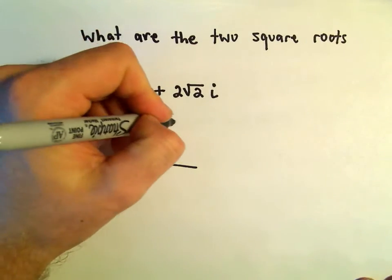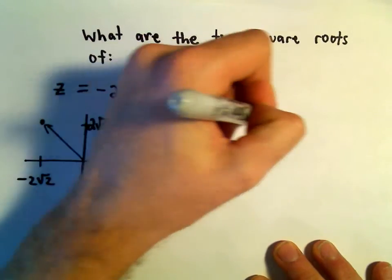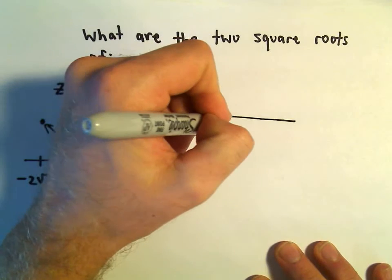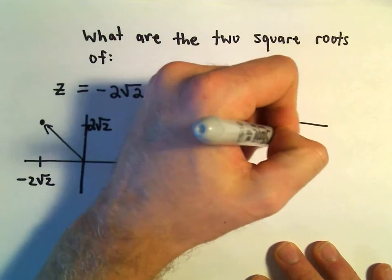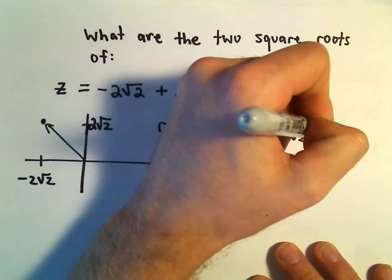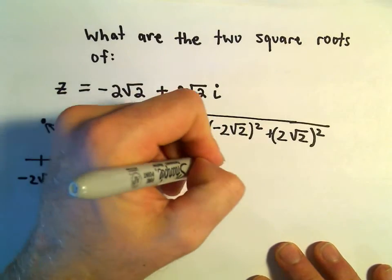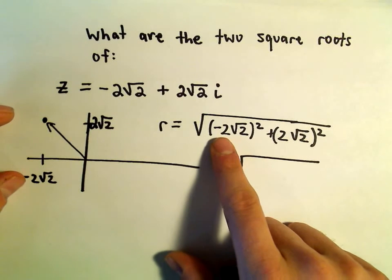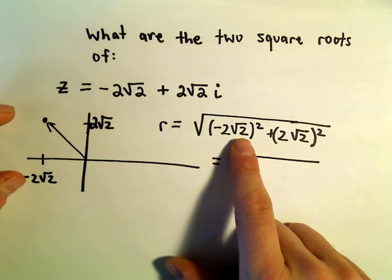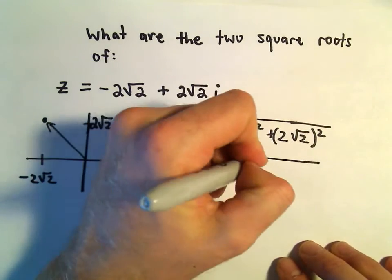A couple things here, so to figure out our r value, we just take each one of these quantities and we square it. So negative 2√2 squared plus 2√2 squared. Well let's see, negative 2 squared is 4. The square root of 2 squared is 2, so 4 times 2 will be 8.